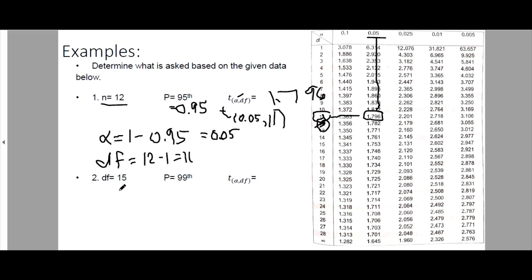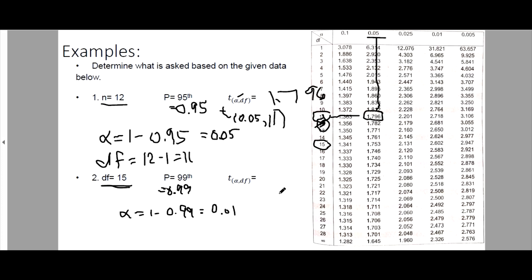Number 2: the degrees of freedom is 15, and the percentile is the 99th percentile. Since it is already the degrees of freedom and not the sample size, we don't need to subtract. The 99th percentile is 0.99, so our alpha is 1 minus 0.99, which equals 0.01. So we have T sub 0.01 comma 15. Looking up 0.01 and degrees of freedom 15, we get 2.602.